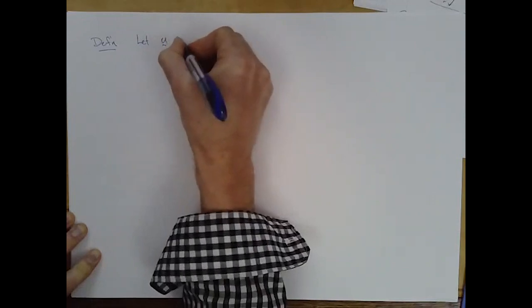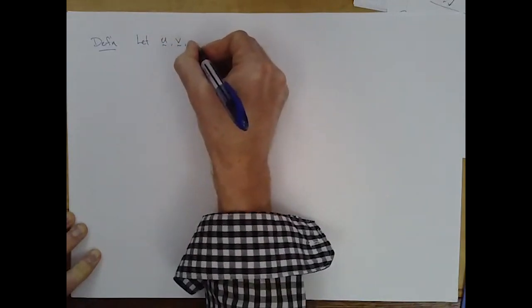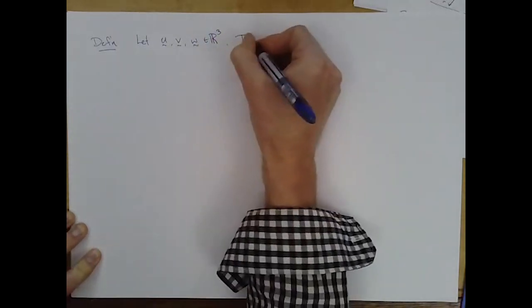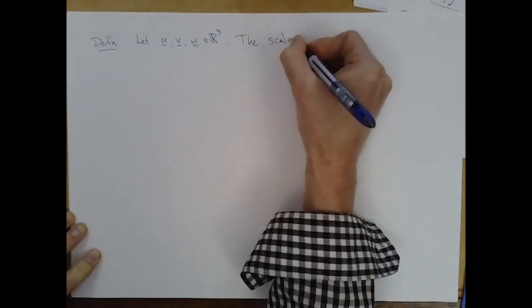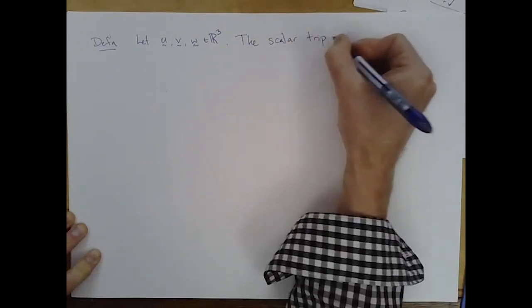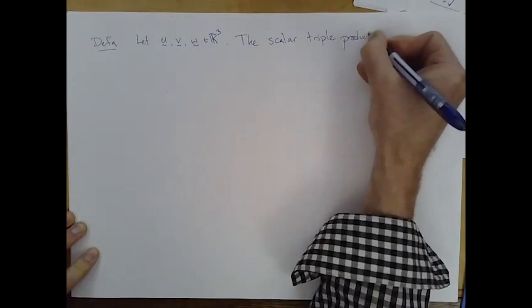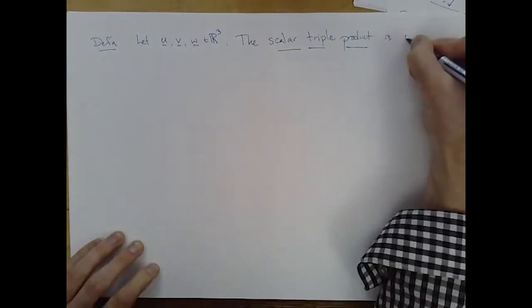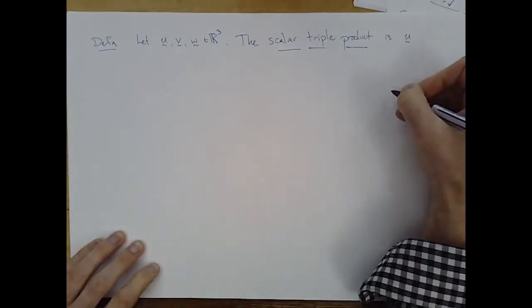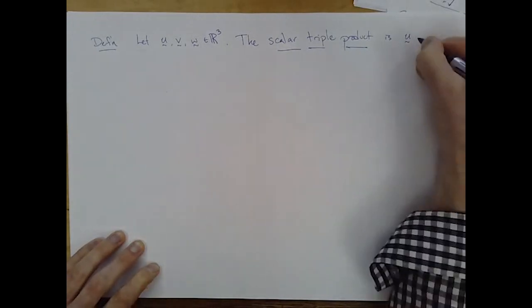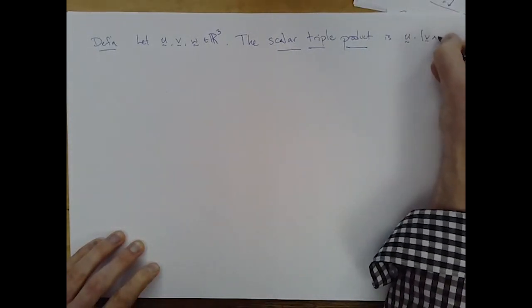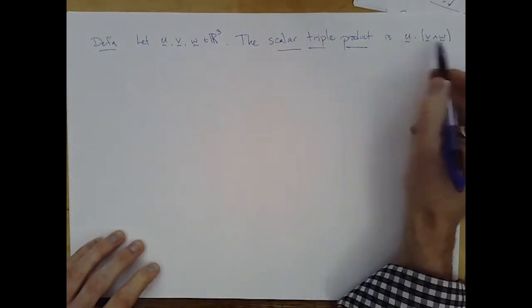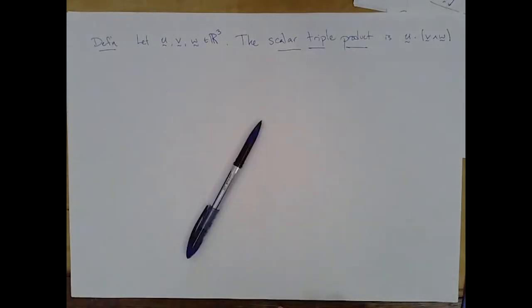Let's let u, v, and w be vectors in R3. The scalar triple product is defined by taking a cross product with two of them and then dotting it with the other one. We'll write this as u dot v cross w. Of course, there are different ways that we could order that, and we'll think about the order in a second.